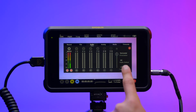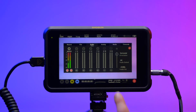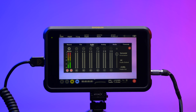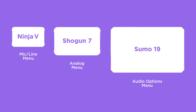On Shogun 7 and Sumo 19, audio can also be boosted by 15, 18, 22, or 24 decibels from the audio out boost feature. The next menu is named differently across devices: it's called the Mic/Line menu on Ninja 5, Analog menu on Shogun 7, and Audio Options menu on Sumo 19.